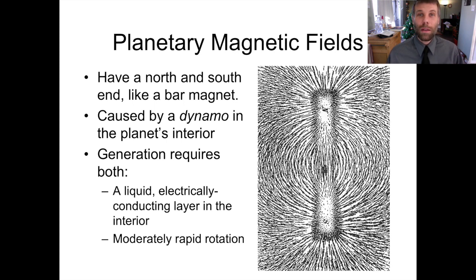Briefly, let's just review the idea of a magnetic field. If you ever played around with a bar magnet in elementary school or something, you maybe have seen something like the image on the right-hand side of the slide before. The bar magnet has a north and a south magnetic pole, and then the dark iron filings end up lining up along magnetic field lines that emerge from the south and then move around and re-enter the north pole of the magnet.